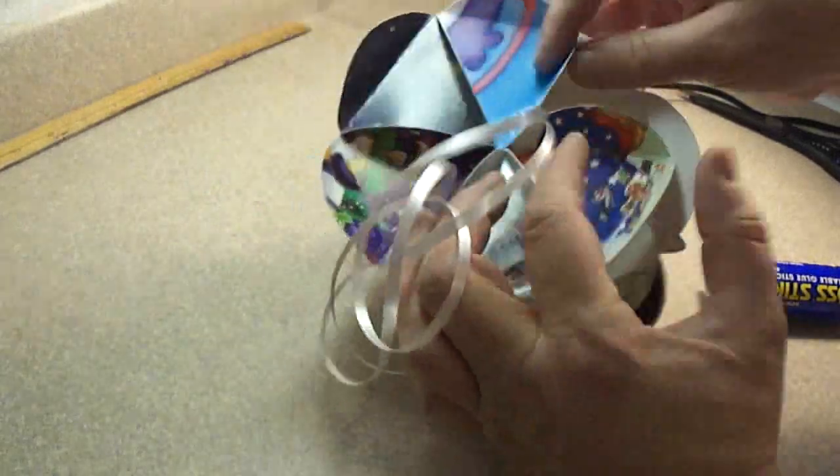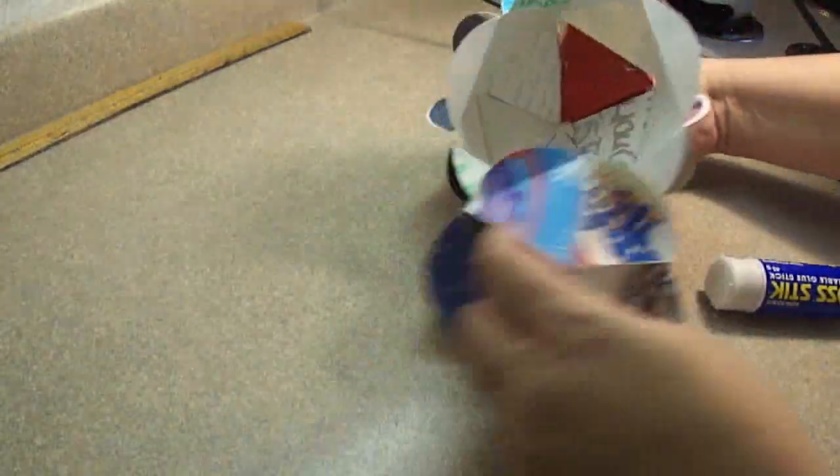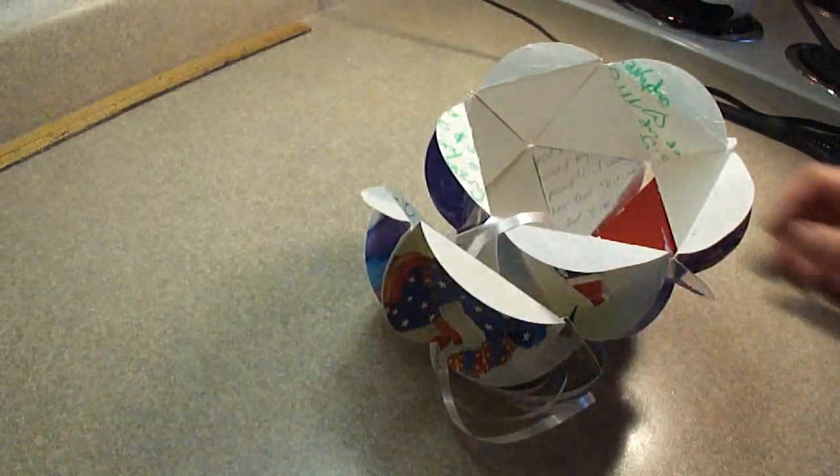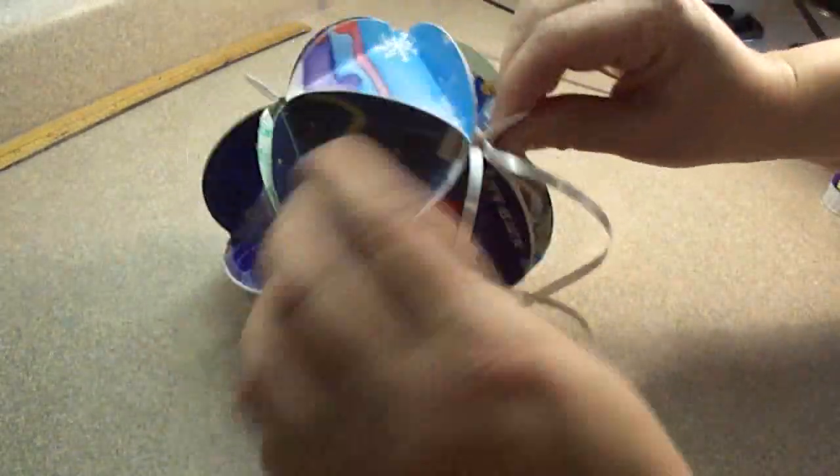And then all that is left to do is to put on the top part. Making sure you put the ribbon through. And then glue the flaps together. And that is all there is to it. There is your completed ornament.